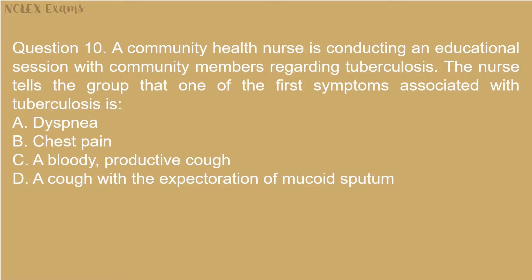Question 10: A community health nurse is conducting an educational session regarding tuberculosis. The nurse tells the group that one of the first symptoms associated with tuberculosis is: A) Dyspnea, B) Chest pain, C) A bloody productive cough, D) A cough with expectoration of mucoid sputum.